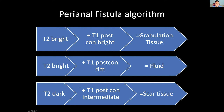Sometimes there could be scar tissue. Scar tissue anywhere in the body looks T2 dark due to fibrosis. If there's T2 dark material in the fistula and after contrast it shows intermediate enhancement - not really bright like granulation tissue - you're looking at scar tissue. Scar tissue can enhance, but not as brightly as granulation tissue. So the algorithm helps improve your dictation: T2 bright with solid T1 enhancement is granulation tissue; T2 bright with rim enhancement only is fluid; T2 dark with intermediate enhancement is scar tissue, indicating a more chronic process.